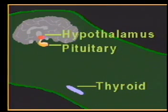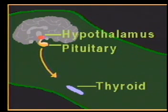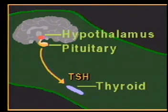TRH attaches to receptors on a specific subset of cells called thyrotrophs, and stimulates the thyrotrophs to produce thyroid-stimulating hormone, or TSH.